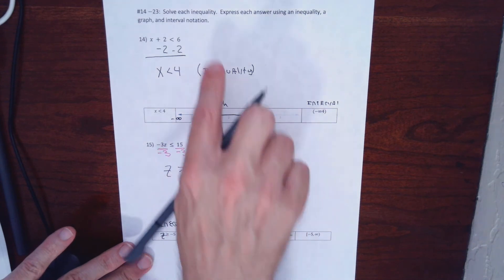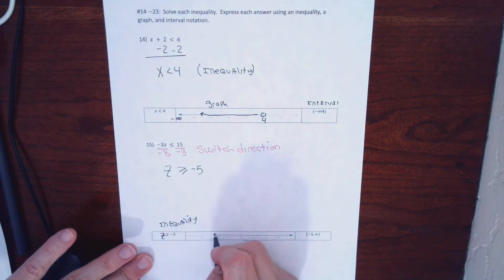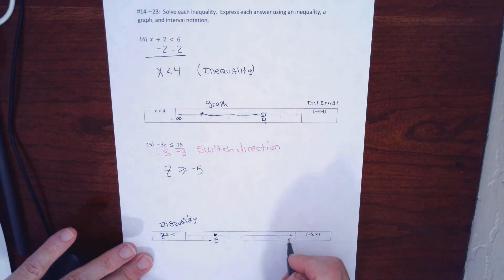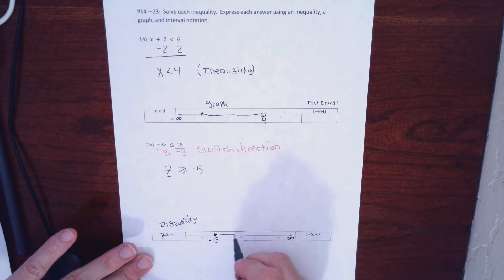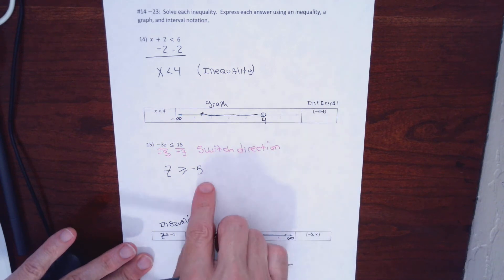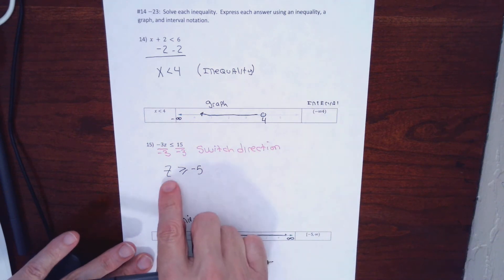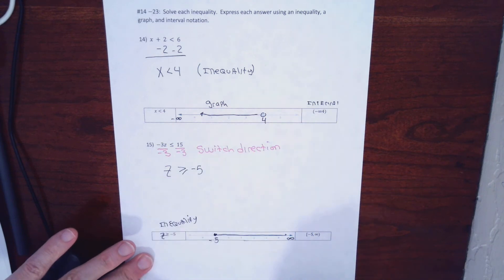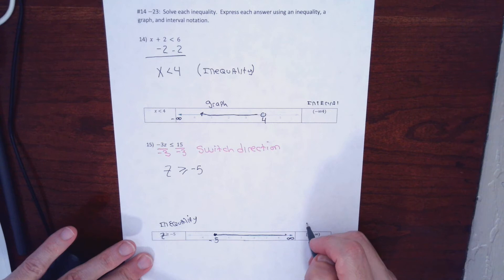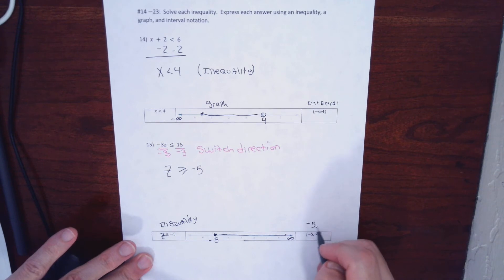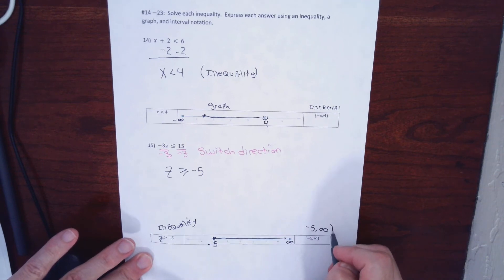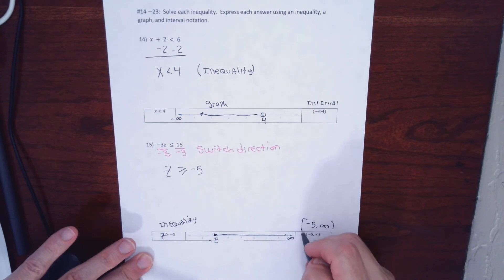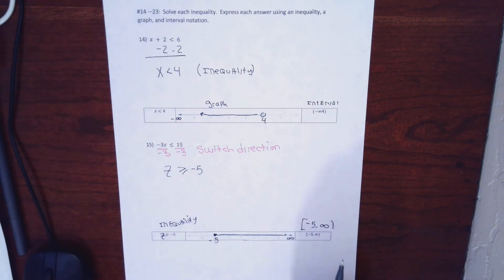For my number line or graphing, I'm going to put negative 5 on my number line. I'm going to get a solid circle, and because of the 'greater than,' I'm going to go to the right. This 'greater than is right, less than is left' only works if the variable is on the left-hand side. Then for my interval, I know my interval goes between negative 5 and infinity — round bracket on all infinities. The solid circle on the negative 5 makes it get a square bracket.